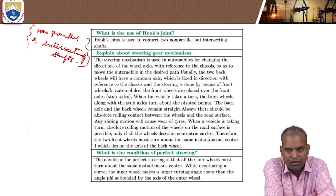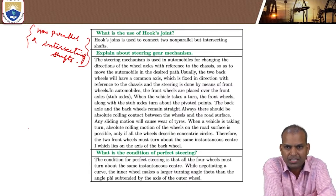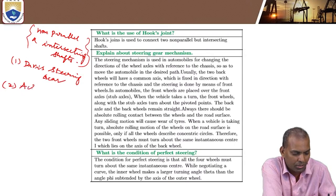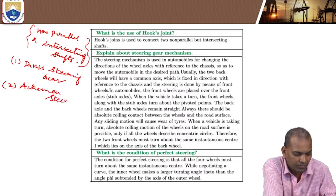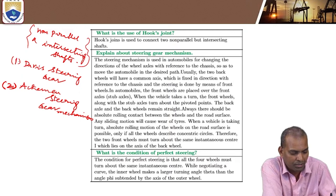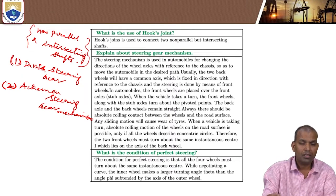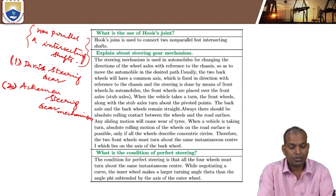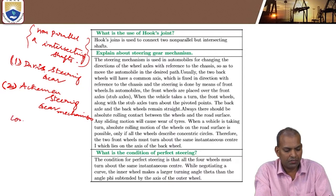Coming to the category of steering gears: there are various types of steering gears. Number one is Davis steering gear mechanism, and number two is Ackermann steering gear mechanism. These two types of mechanisms are designed based on the condition for perfect steering or correct steering.